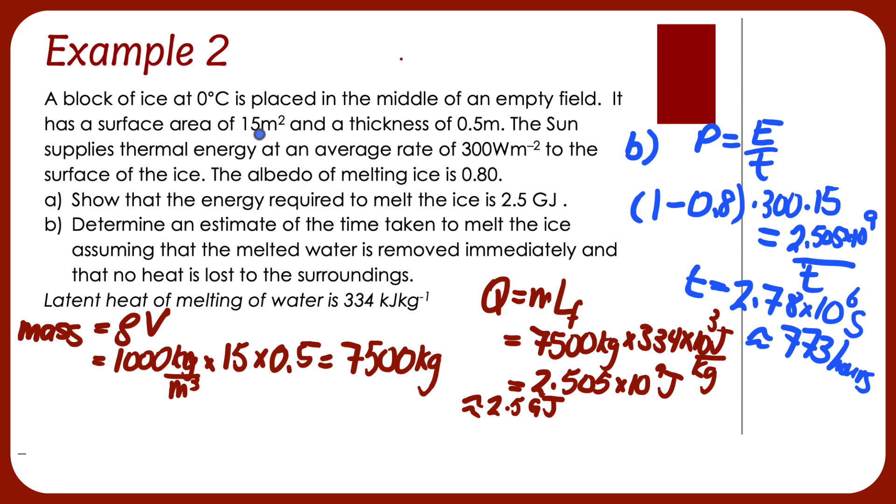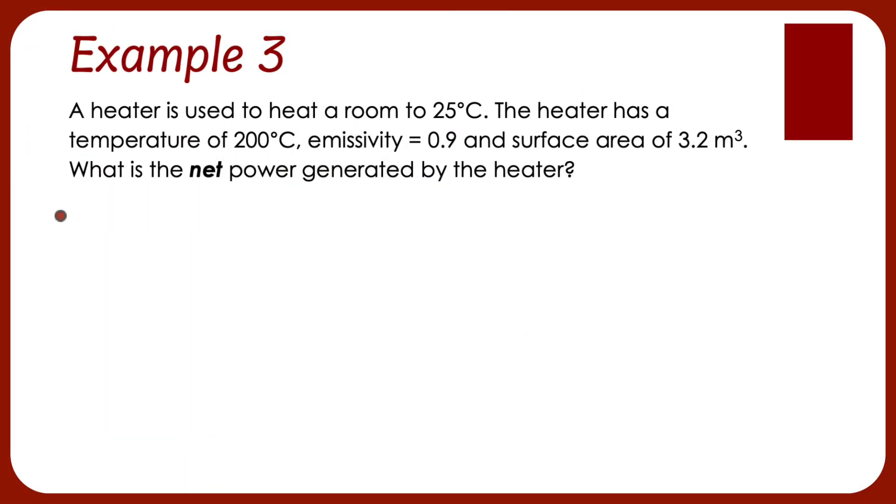If I look at all my numbers, I probably should have just kept it to two significant figures. And example three. It says a heater is used to heat a room to 25 degrees. The heater itself has a temperature of 200 degrees, an emissivity of 0.9, and a surface area of 3.2 meters squared. What is the net power generated by the heater?